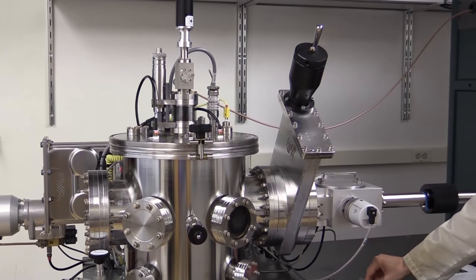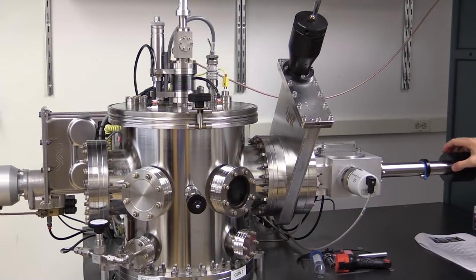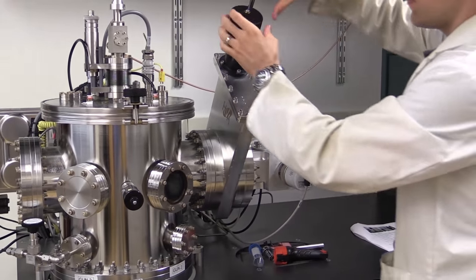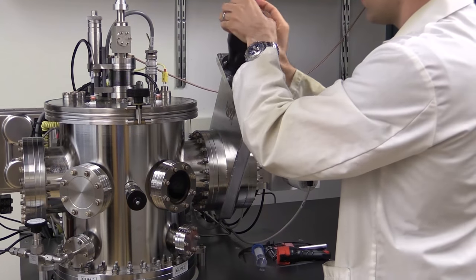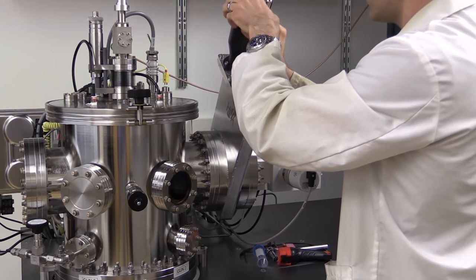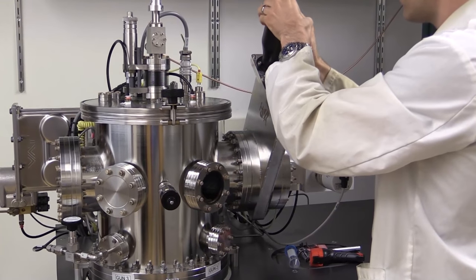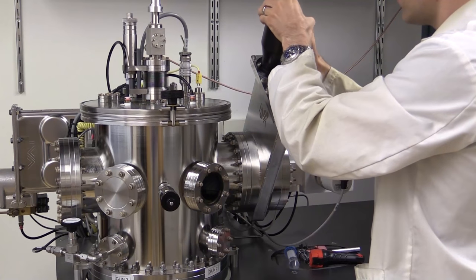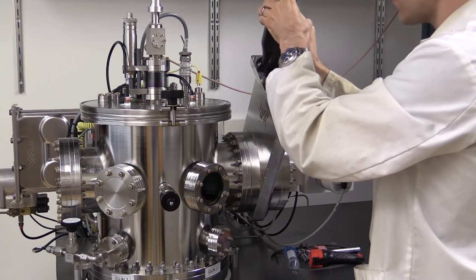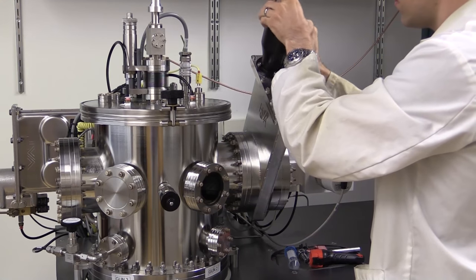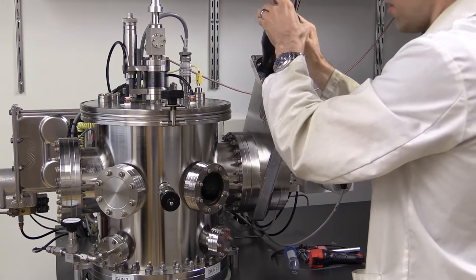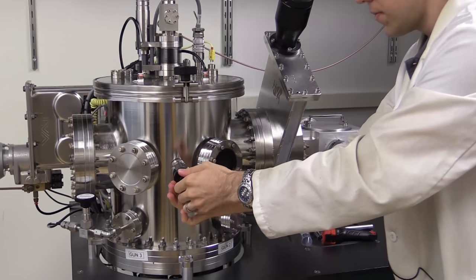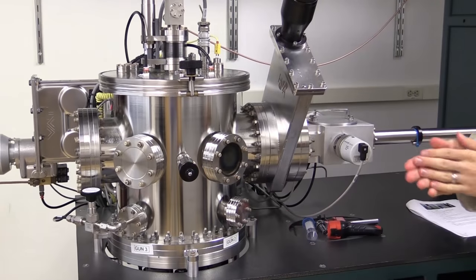I'll move the tray back from the main chamber to the load lock. Now I'm going to close the gate valve by rotating this clockwise. I'll close the viewport shutter. And now we're ready to do our sputtering process.